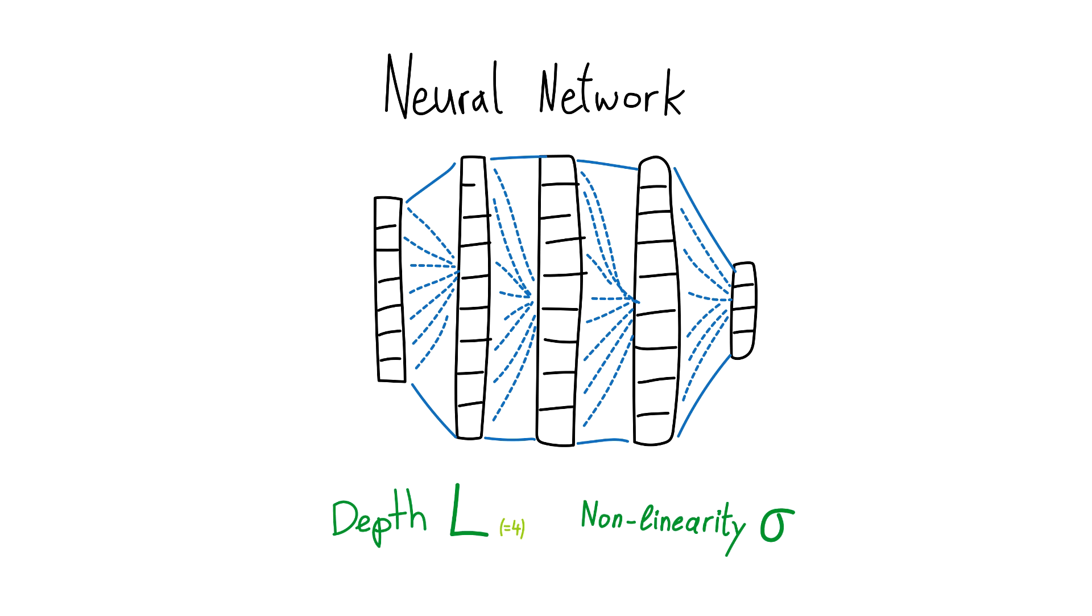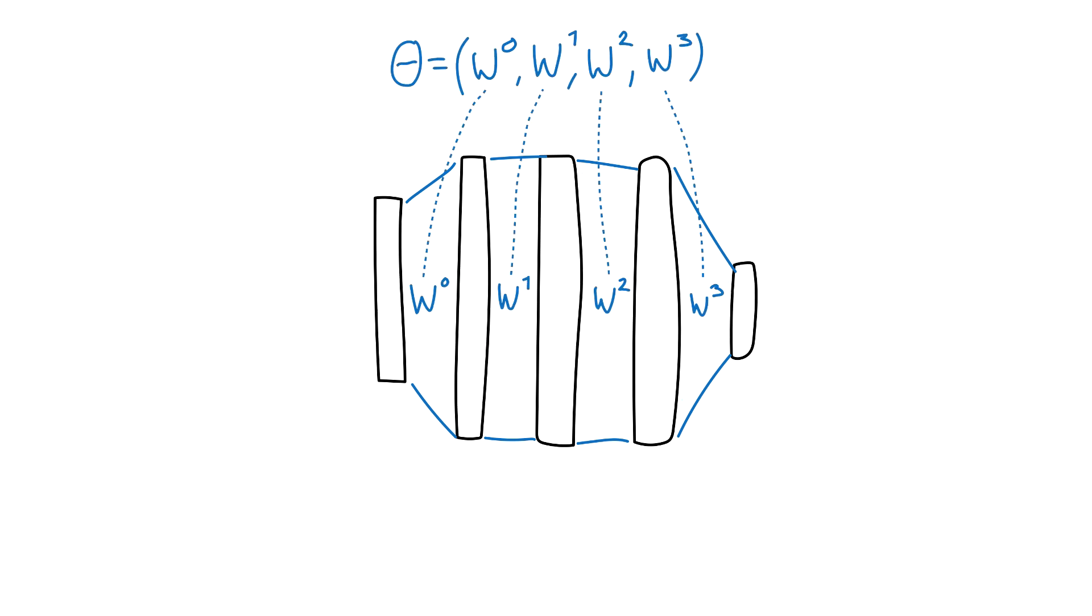We start with a fully connected neural network of any depth and with a Lipschitz non-linearity. We gather all parameters of the network into one vector theta, which is initialized randomly and then trained with gradient descent.